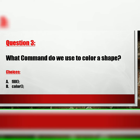Question 3: What command do we use to color a shape? Your choices are A: fill followed by parentheses and a semicolon. B: color followed by parentheses and a semicolon.